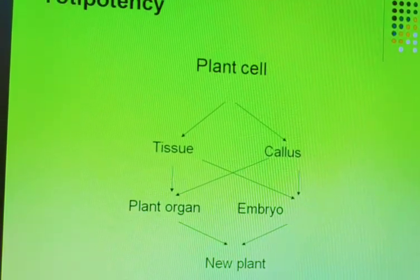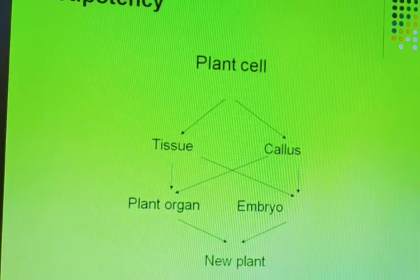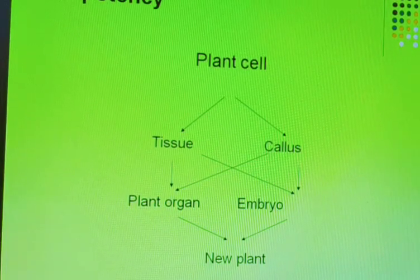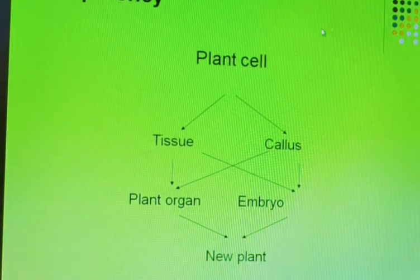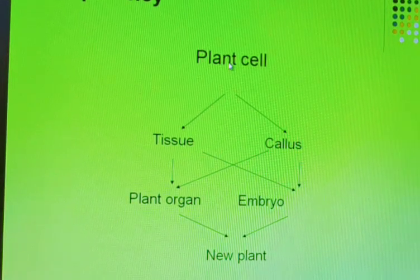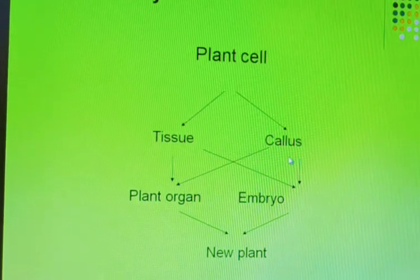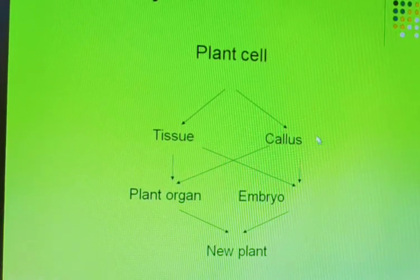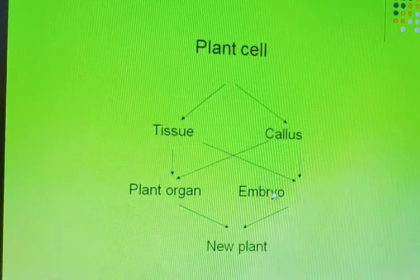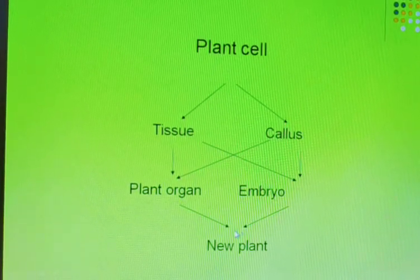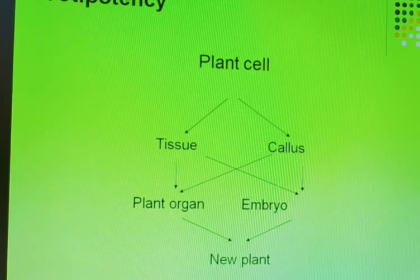So exactly what is totipotency? Plant cells or tissues become callus. That callus is again regenerated into plant organs. Plant cells are inoculated into the artificial medium and become callus. That callus differentiates into plant organs, and those plant organs become an embryo. That embryo is regenerated and becomes a new plant. This is the concept of totipotency and the whole concept in plant tissue culture.